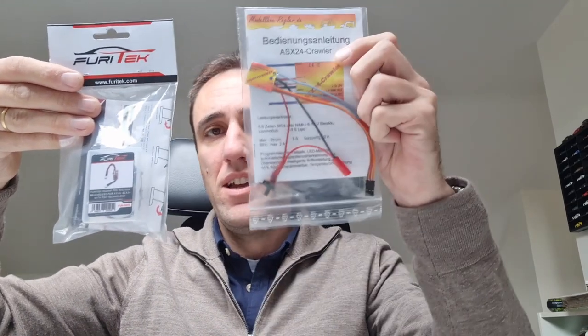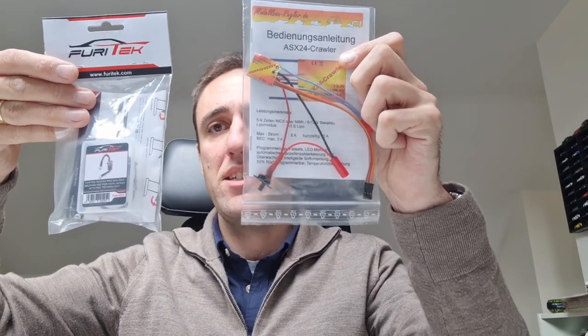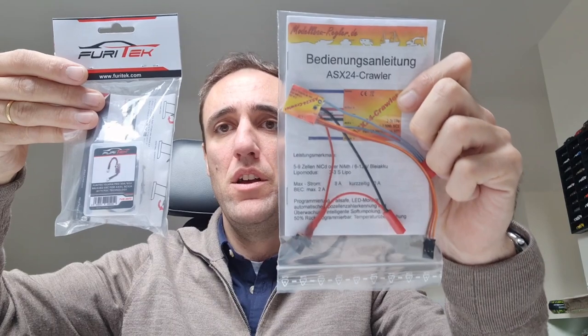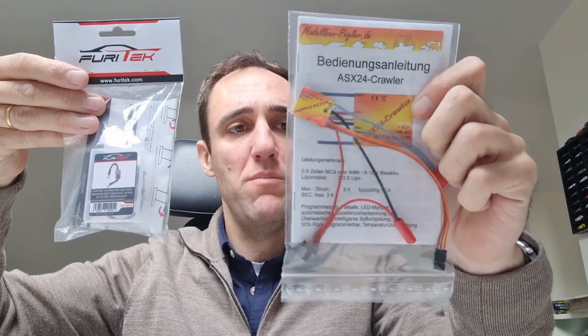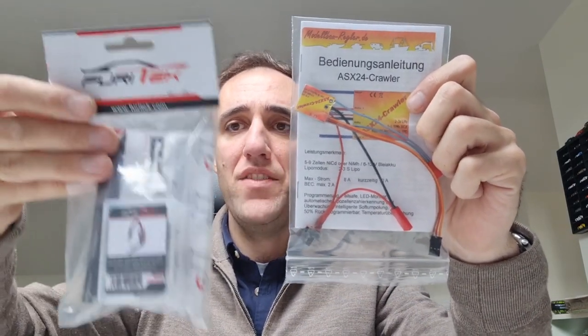Hi guys, welcome to the channel. Today we have a very special content. We're testing what are considered the best two ESCs for a brushed setup on Axial SCX24. Today we have the Furitech Iguana Pro and the Model Bar Regular AESX24. This is the new version they have specially made for micro crawlers, and this is the best Furitech ESC for a brushed motor.